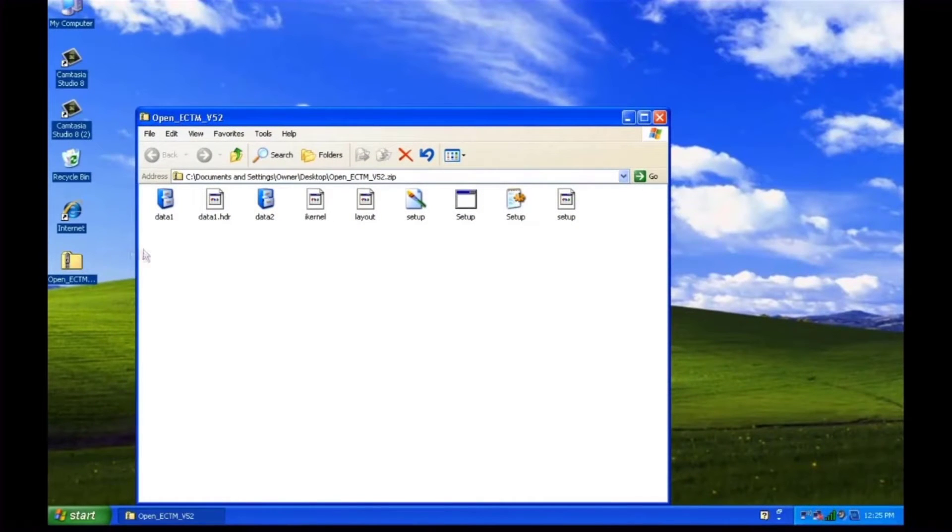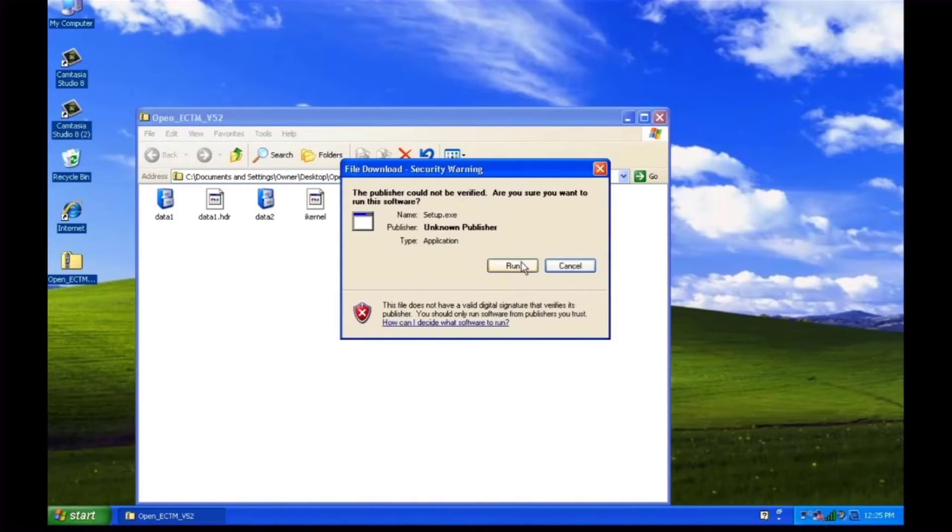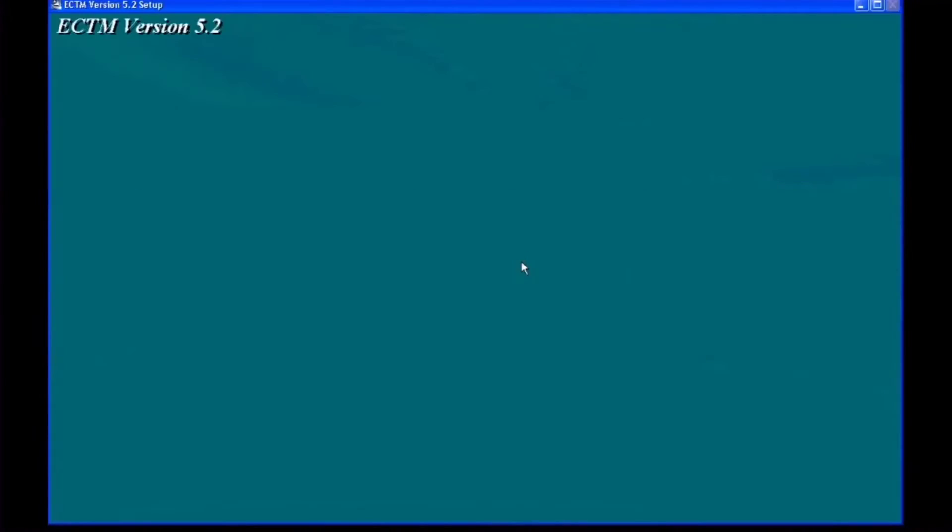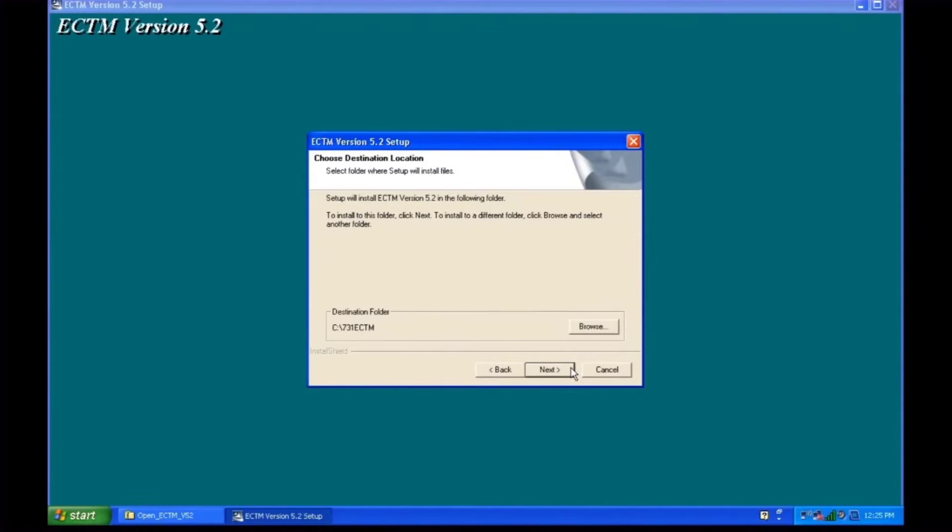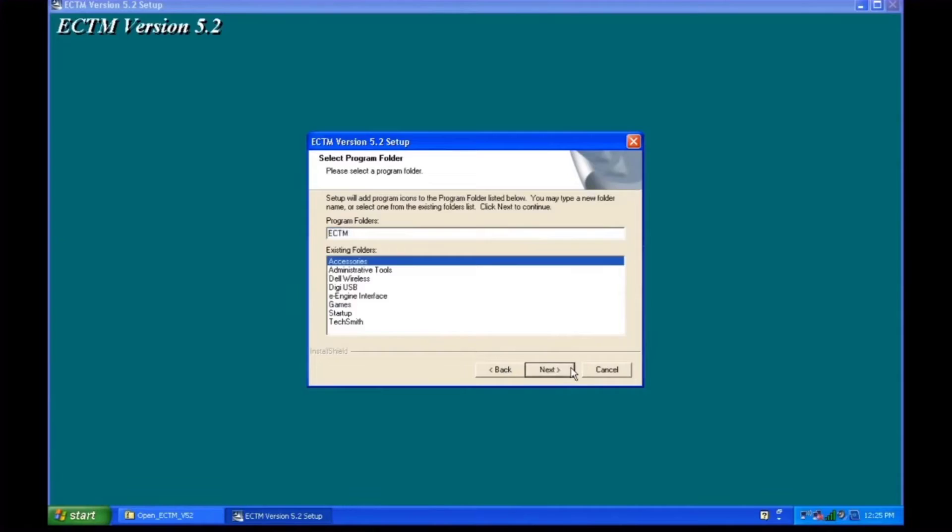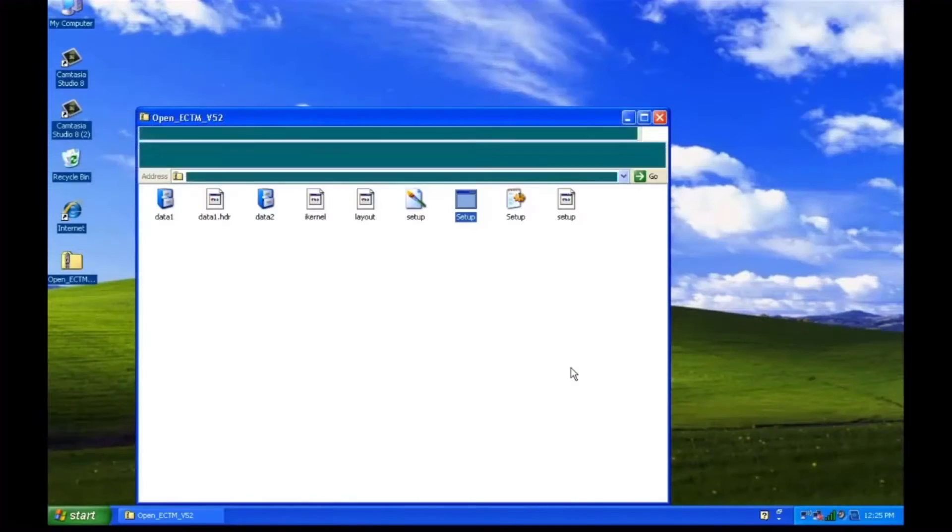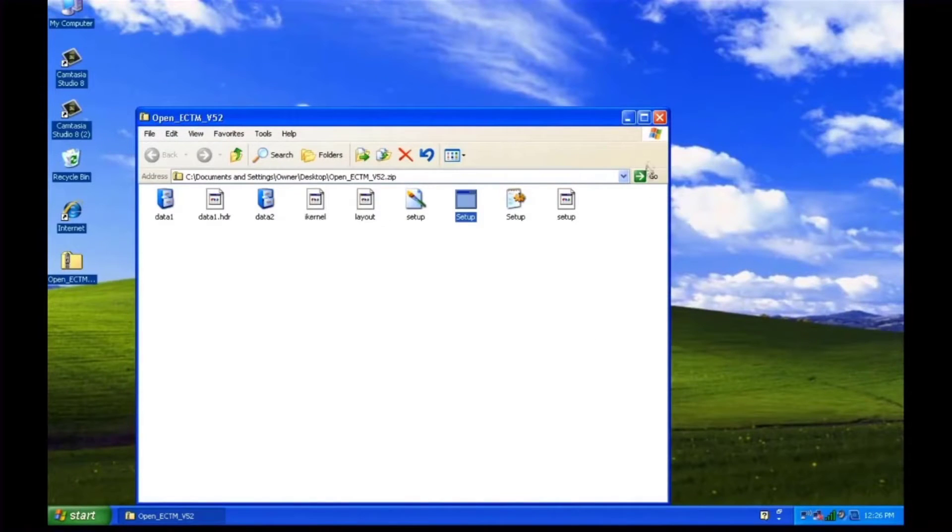Click on Setup to start the install. The ECTM software defaults to the C drive. We recommend that you don't change the destination folder. Go through the prompts and install the software. Finish the install and restart your computer.